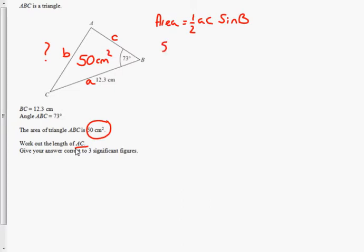So all of this information is put into the formula. That's equal to half multiplied by 12.3 multiplied by C. We don't know. That's what we're trying to find, multiplied by the sine of angle 73.